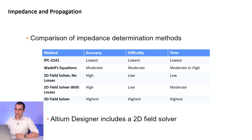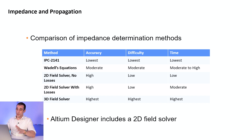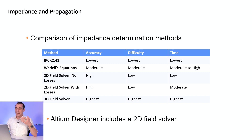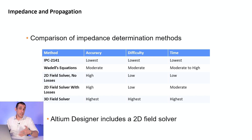The next level of impedance calculation, which I think is the best trade-off between accuracy and difficulty, is a 2D field solver. This is a standard method that more advanced PCB design software applications use to get an impedance calculation — and this is actually what Altium Designer uses. It has very high accuracy. The difficulty is really low because you're just plugging in values for your trace width, height above the reference plane, and the copper weight. It's kind of a black box, but it gives a very accurate answer. This type of application is normally used for coplanar arrangements, especially coplanar arrangements on two-layer boards, the type you wanted to calculate for your differential pairs.